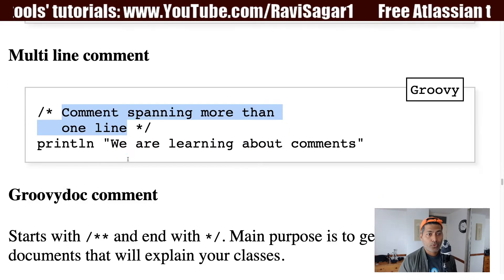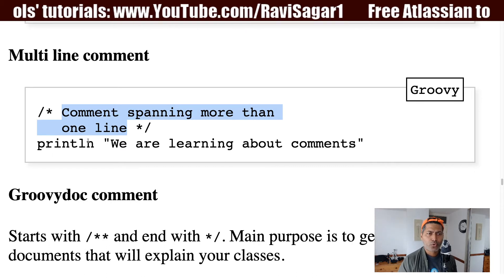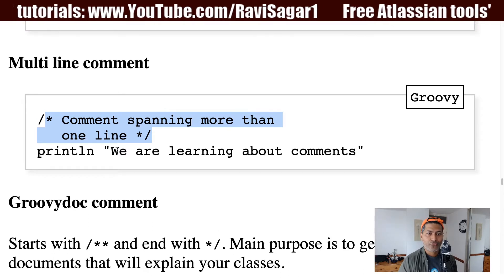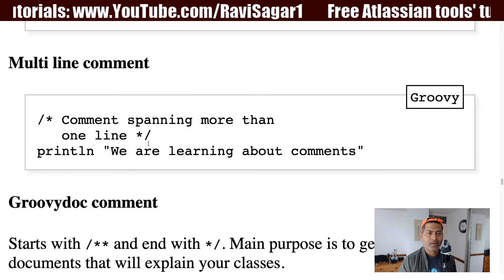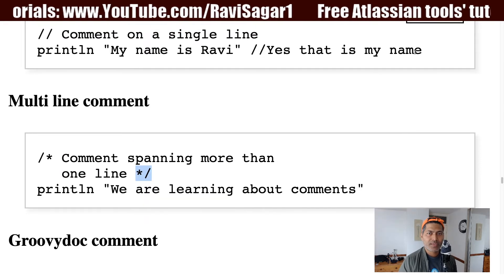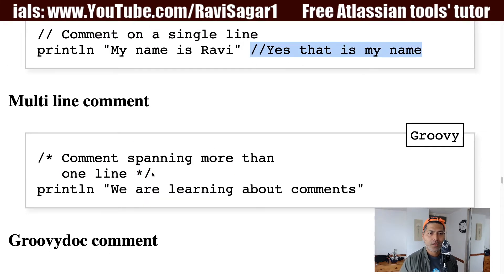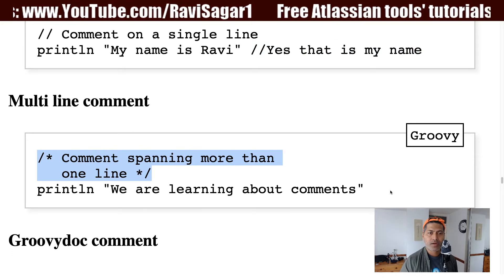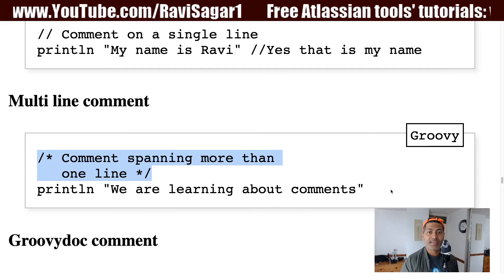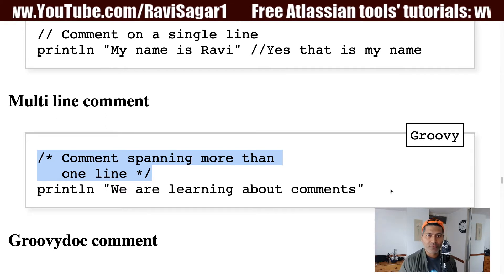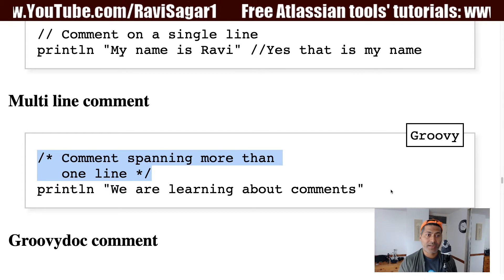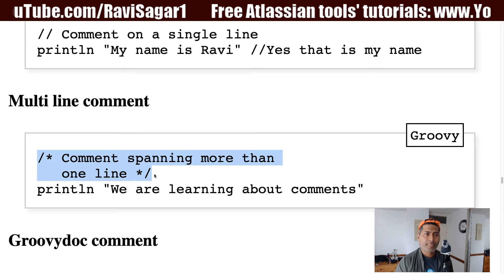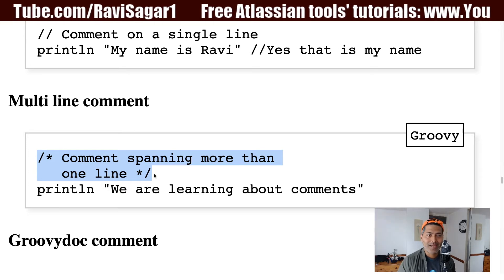You can also use the multi-line comment within or around your statements. For example, you can write a multi-line comment after a statement and then continue further on the same line with another print statement. This can be useful in situations where you have a bit more to describe about your code.